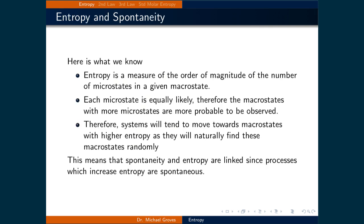So here is what we know about entropy and spontaneity. Entropy is a measure of the order of magnitude of the number of microstates in a given macrostate. Each microstate is equally likely, therefore the macrostates with more microstates are more probable to be observed. So, systems will tend to move towards macrostates with higher entropy as they will naturally find these macrostates randomly.